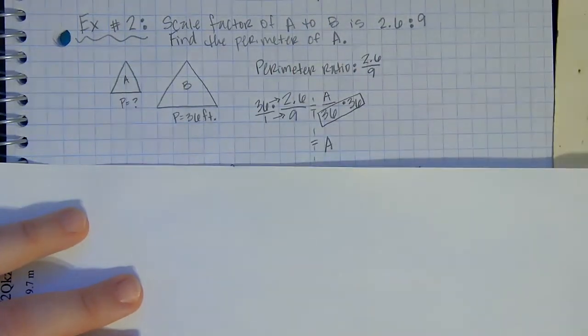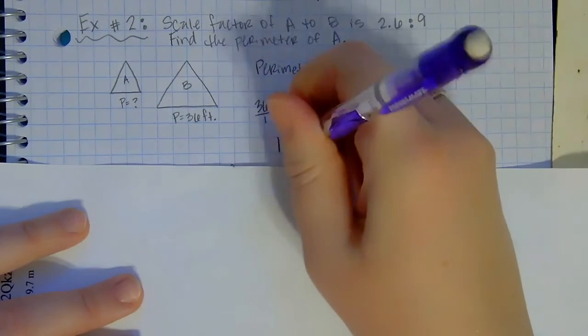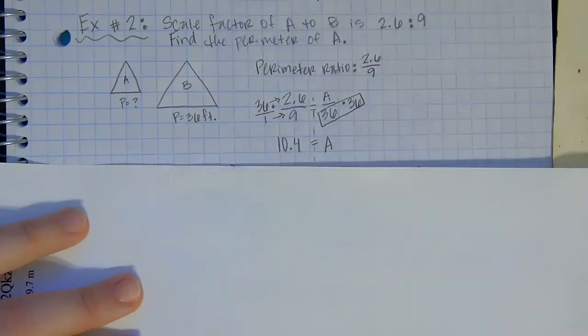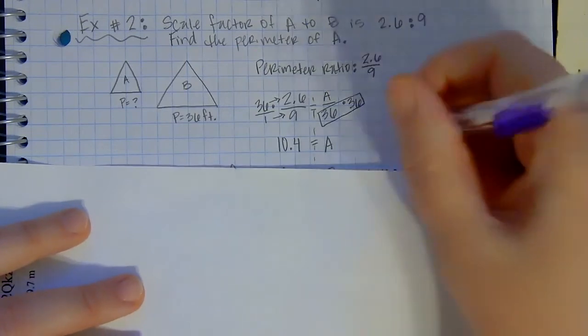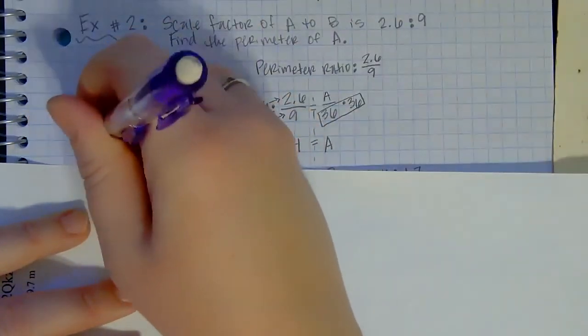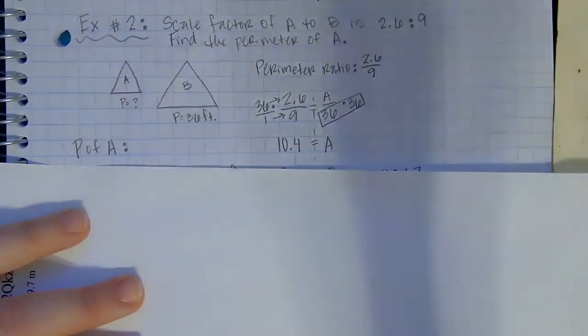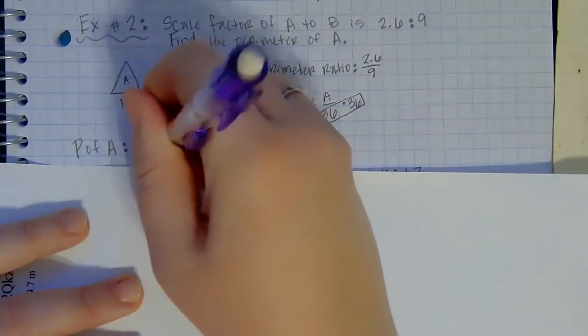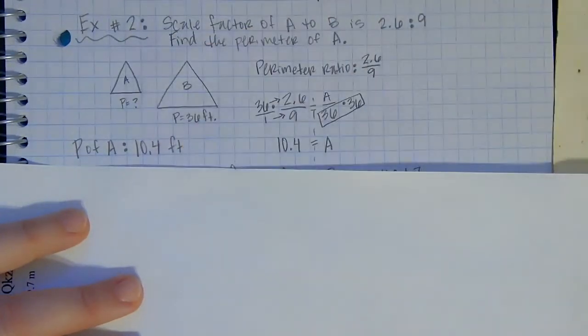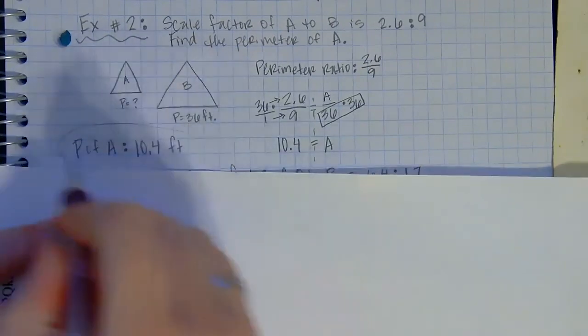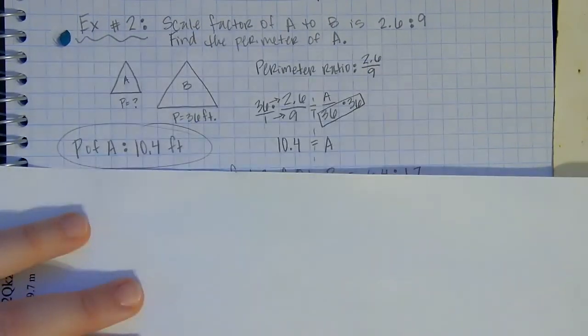So what I would be doing in my calculator is I would go 36 times 2.6 and then divide it by 9. So I get 10.4 as A. Don't forget, we always have to write it with units. So I'm going to say our perimeter of A is 10.4, and if it was feet on this one, then it's got to be feet here as well.